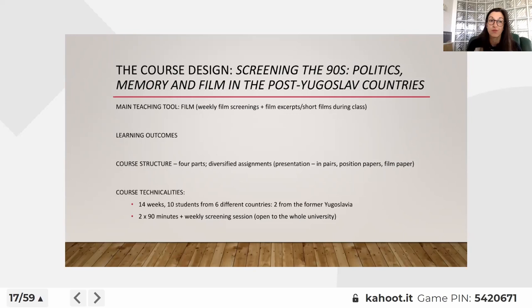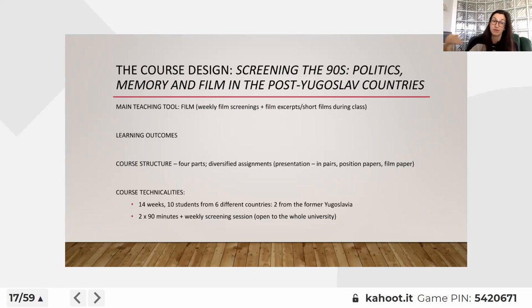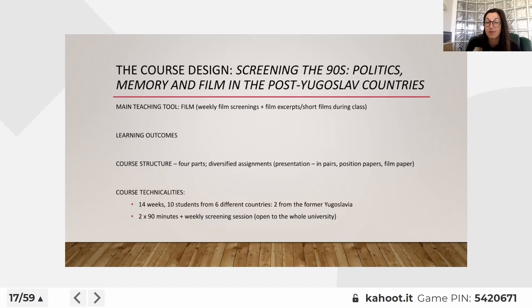The course was divided into four parts, moving from history and general IR and political science explanations, towards building narratives, then collective cultural memory theory, then particular topics relevant in post-Yugoslav countries as memory discourses, and finally the evolution of memory. Assignments included group presentations in the first week for an immersive experience, position papers for each of the four parts, and one film paper. The course was a 14-week semester with 10 students from six different countries — from Eritrea to the US — two of whom were from former Yugoslavia.